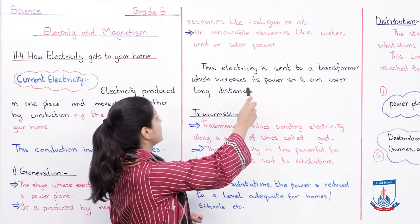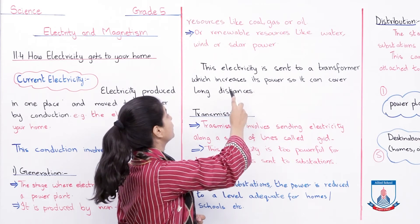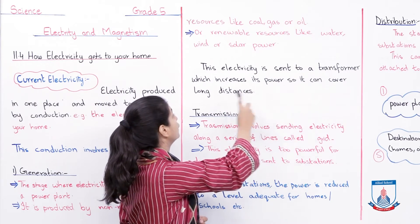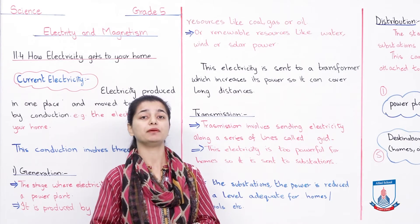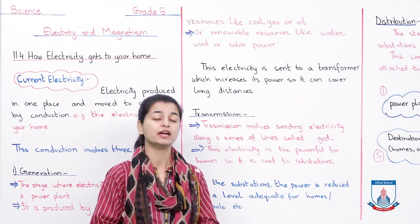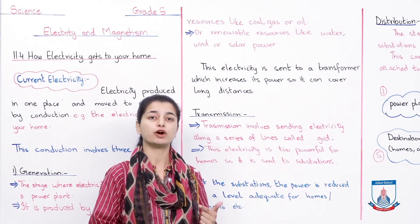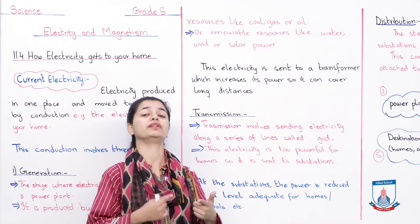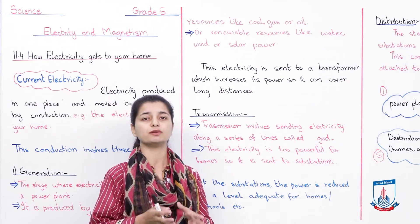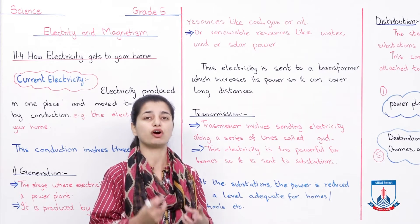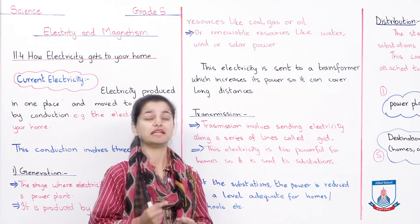This electricity is sent to a transformer which increases its power so it can cover long distances. What happens is electricity is made in the power plant and goes to the transformer. The transformer increases the power of electricity and enhances it so the electricity becomes stronger and can travel long distances.